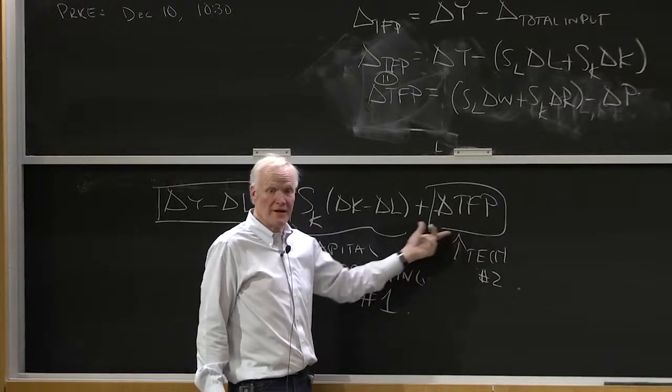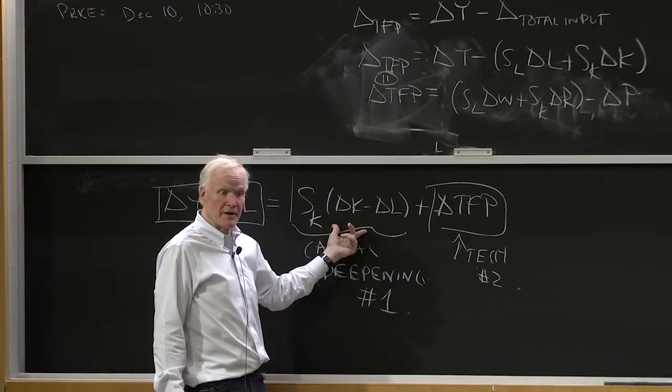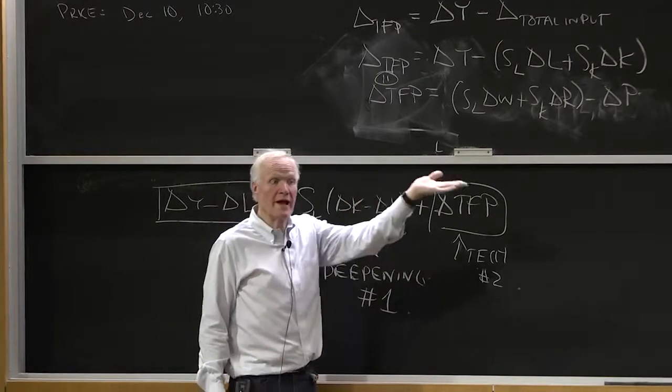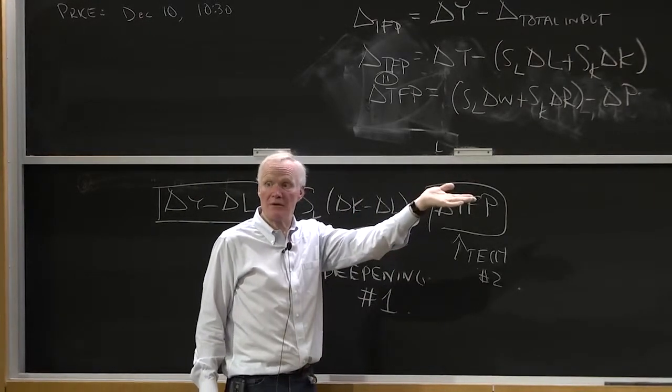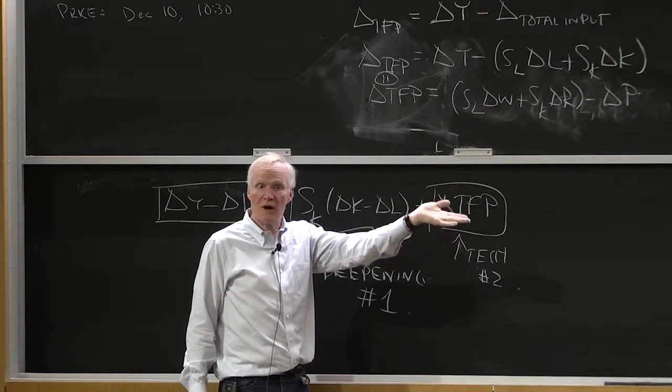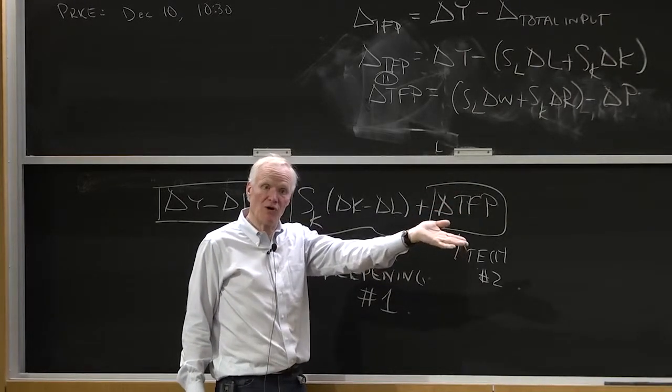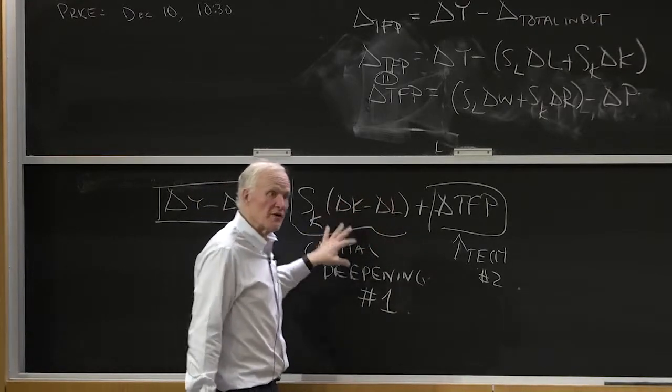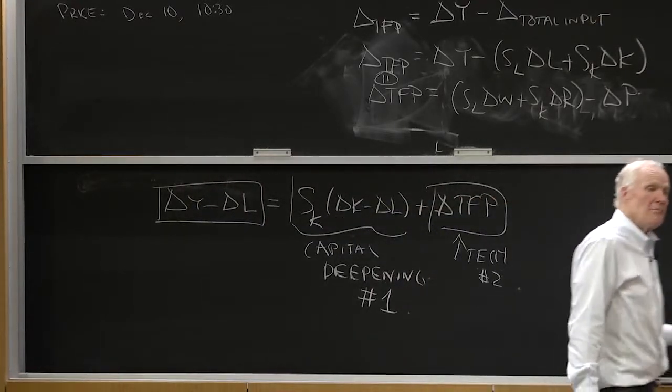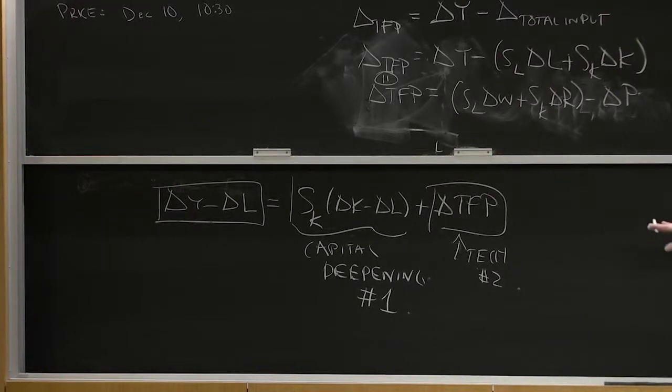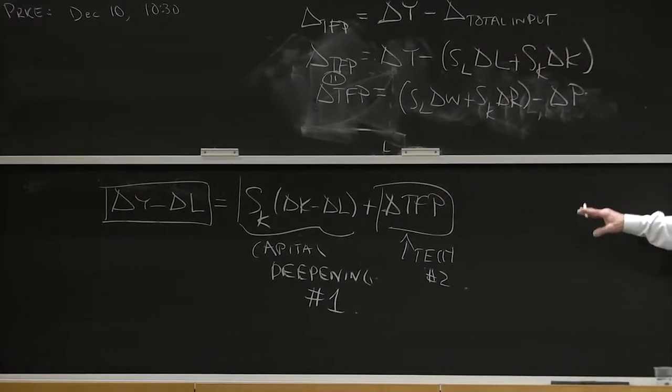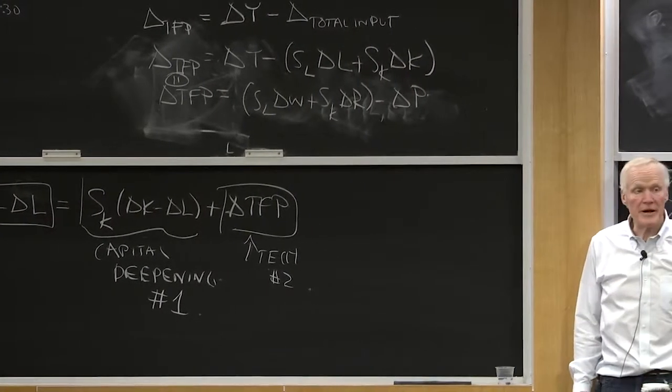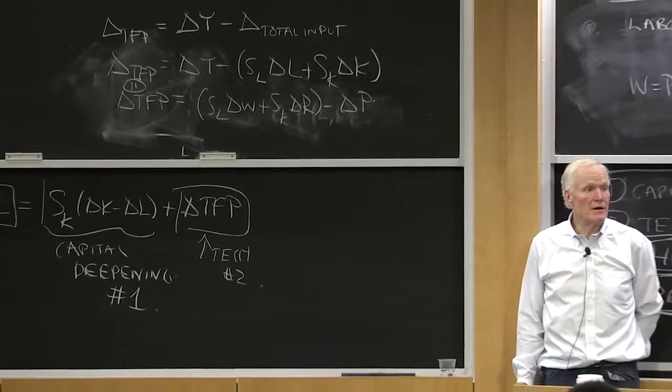It would typically induce capital deepening. Because if it raised the marginal product capital, we then want to have more capital. We'd keep increasing capital until the marginal product capital came back down to its long-run level. So these two things would be causally related to each other, and they would complement one another. That is, improvement in technology would typically be associated with a further growth in output per worker generated by capital deepening.